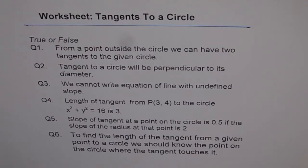So, true or false? Question 1: From a point outside the circle we can have two tangents to the given circle.